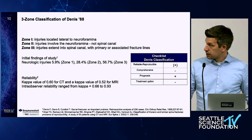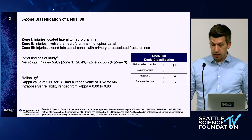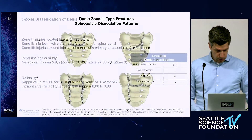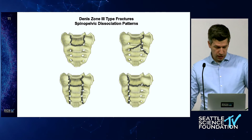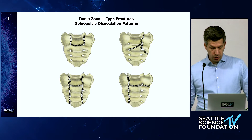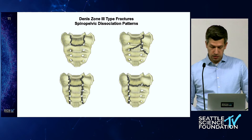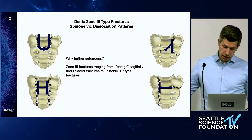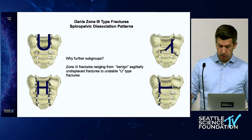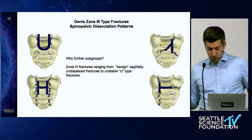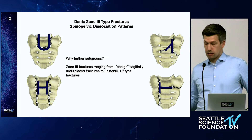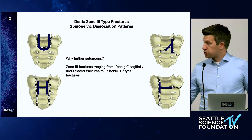The original aim of the Dennis classification was to assist clinicians in quantifying the likelihood of neurologic injury, and it does that well — but reliability studies have shown it is not particularly reliable even as a simple system. Importantly, morphology matters beyond just the fracture zone. For example, all U-type fractures extend to the spinal canal and are Dennis zone three, but U-type fractures are unstable, compared to undisplaced type three sagittal fractures. Fracture patterns are often referred to as H, U, lambda, or T fractures.